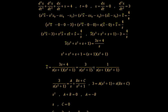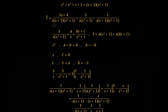You can multiply these out to convince yourself that splitting is correct. Now for the first term, 3/[s(s² + 1)], we use partial fractions. This can be written as a/s + (bs + c)/(s² + 1). Multiplying both sides by s(s² + 1) gives us 3 = a(s² + 1) + s(bs + c). We then take coefficients of s², s, and the constant term.